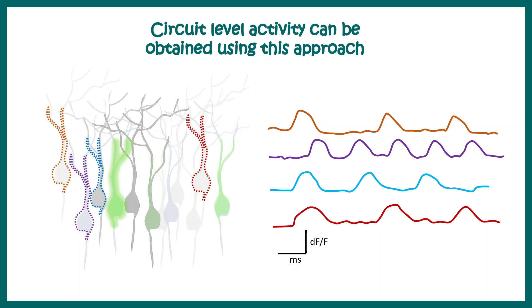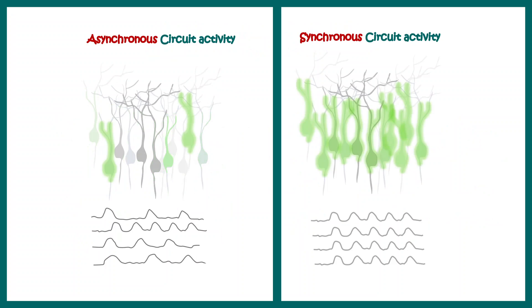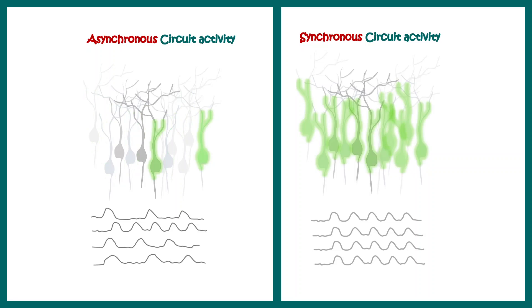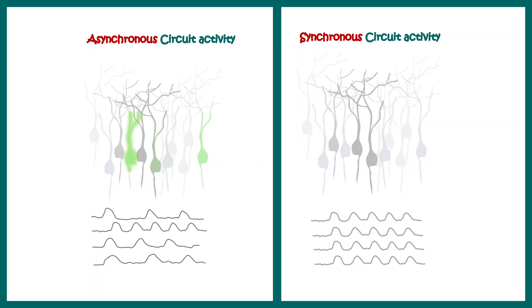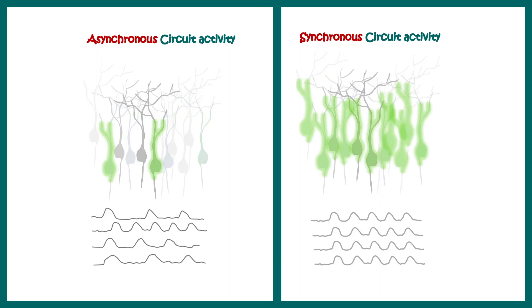This spatial-temporal dynamics of neuronal activity can be captured using this approach. Moreover, we can get an idea about overall circuit activity. On the right-hand side the circuit is functioning in a synchronous manner — all neurons firing together — whereas on the left side the neurons are firing in an asynchronous fashion, not firing altogether.